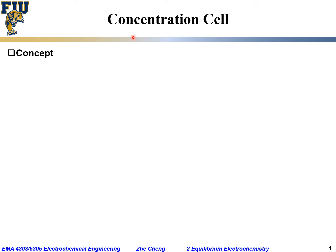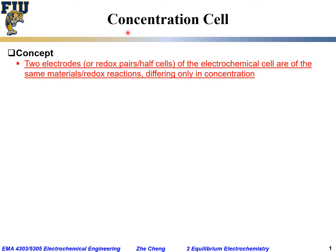Previously we have focused on electrochemical cells that involve two different pairs of redox reactions or two different electrodes. Now let's look at a different kind of electrochemical cell called a concentration cell. These are electrochemical cells that involve two electrodes of the same material or the same redox half-cell reactions, where the two half cells differ only in concentration. They are of the same material and same chemistry.